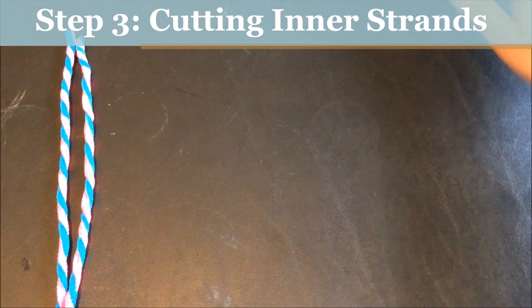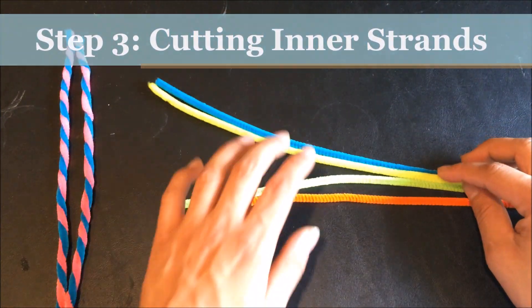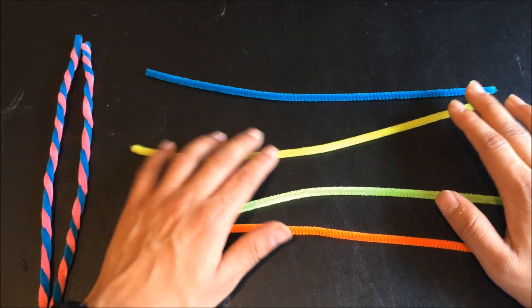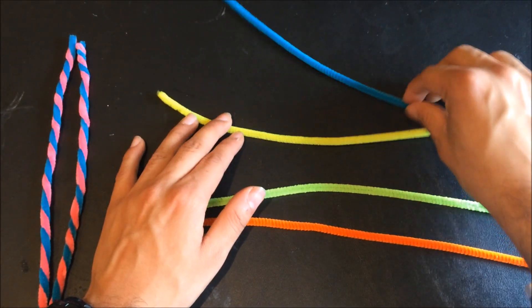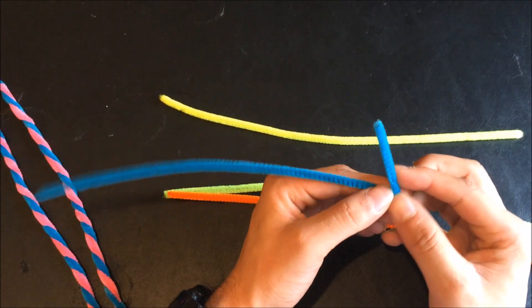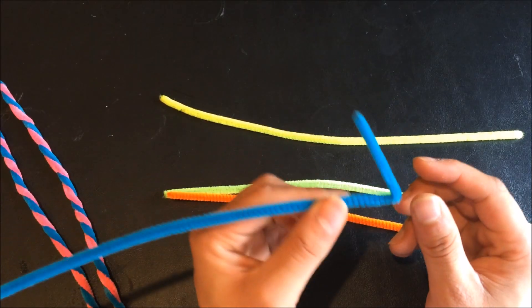For this next step, we're going to have the inner molecules of our DNA model. And what we want out of this are going to be five equal parts from each of the strands. Perhaps about this much would be good.